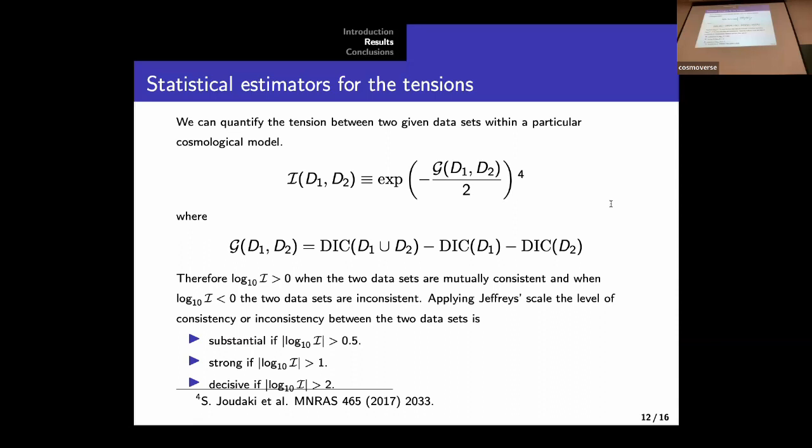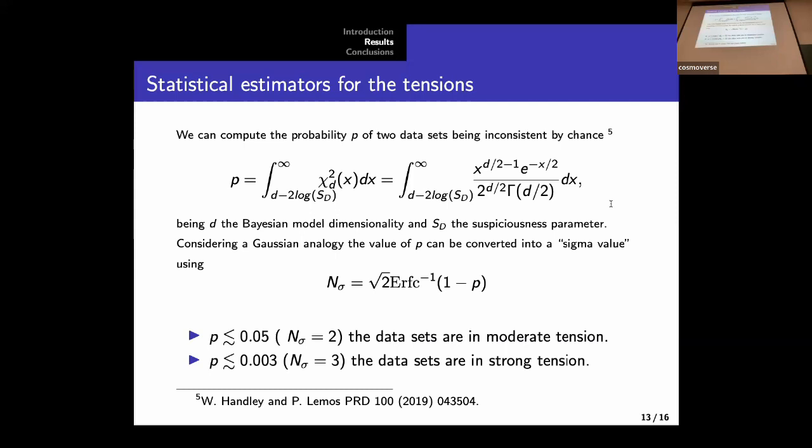If we want to properly test the tension between two datasets in the context of a given model, we can use some statistical estimators. Here, we consider the truth. This estimator is built in such a way that when we have positive values for this estimator, it means that the datasets are mutually consistent, whereas for negative values, they are inconsistent. And also, applying the Jeffreys scale, we can classify these levels of tension. The second one requires a computation of the suspiciousness parameter, we have looked at this this morning, and also the Bayesian dimensionality.